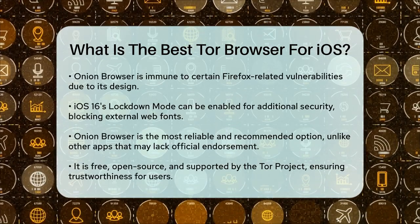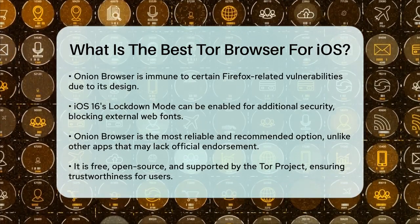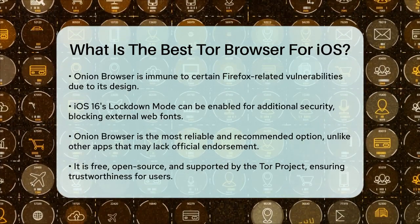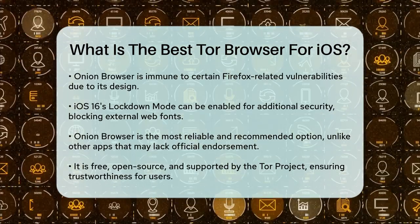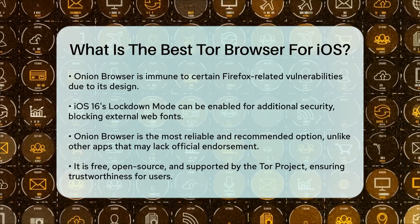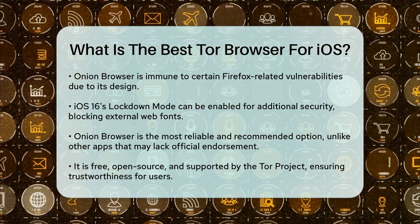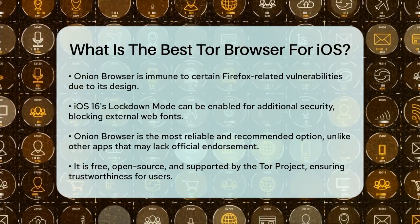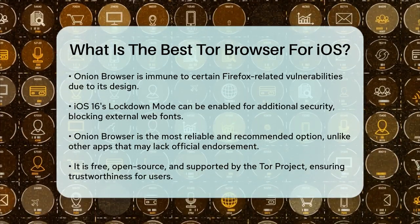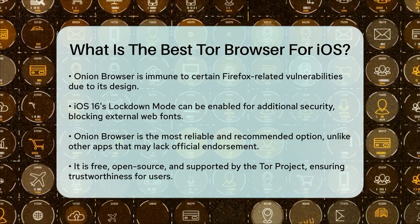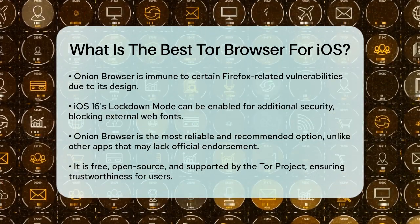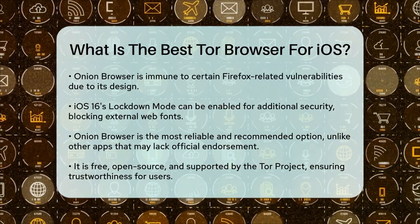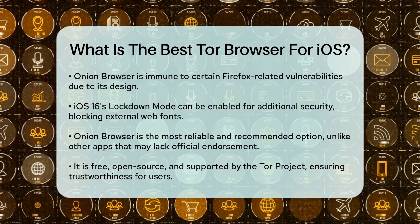In contrast to other apps claiming to be Tor browsers, Onion Browser is the most reliable and recommended option for iOS users. Other apps, like those described as Tor Browser or Onion Tor VPN, might promise similar features but lack the official endorsement and the robust development and maintenance that Onion Browser receives. So if you're looking for a secure and private browsing experience on your iOS device, Onion Browser is your best bet — it's free, open source, and endorsed by the Tor project, making it the most trustworthy option available.